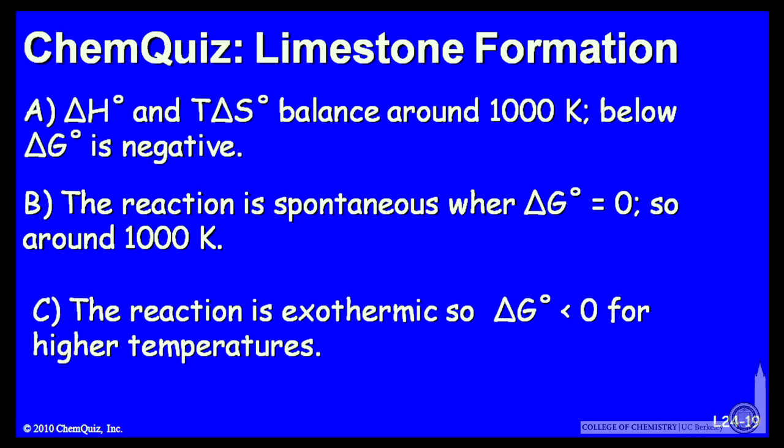Or C: the reaction is exothermic, so delta G less than 0 will occur at high temperature. Think about those three possible explanations and make a selection.